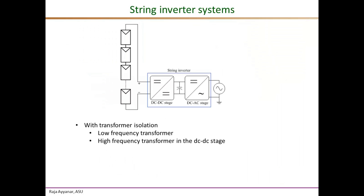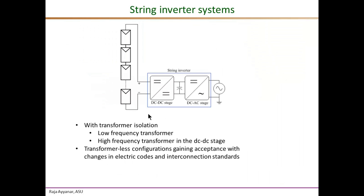String inverters typically have two stages internally: a DC-DC stage and a DC-AC inverter stage. Earlier designs all had transformer isolation — many at low frequency and more recent ones with a high-frequency transformer in the DC-DC stage. The emerging trend is a move toward transformer-less arrangements, and NEC codes and interconnection standards of many utilities are beginning to accept transformer-less solutions, provided they have additional protection such as ground fault detection.